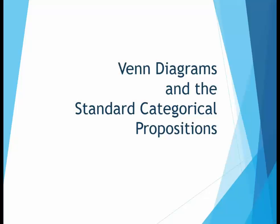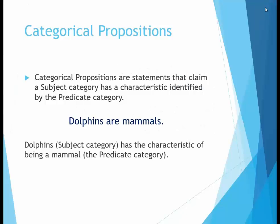This video introduces the use of Venn diagrams to illustrate the relationship between categorical propositions. Before we use Venn diagrams to describe categorical propositions, let's look at the basic definition of a categorical proposition. A proposition is a statement that is either true or false. A categorical proposition is a claim about two categories or types of things — for example, the category dolphins being related to the category of mammals, saying that all of the dolphin category is also part of the mammal category.